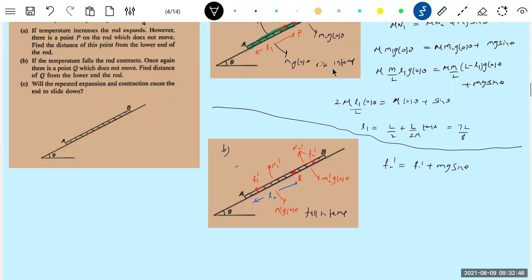F2' equal to F1' plus mg sin theta. F2' should be equal to mu M2' g cos theta. Mu M1' M2' g cos theta plus mg sin theta. Now, mu M2', M2' will be m by L times L minus L2 g cos theta. Mu M2' g cos theta. Solving will get expression for L2.